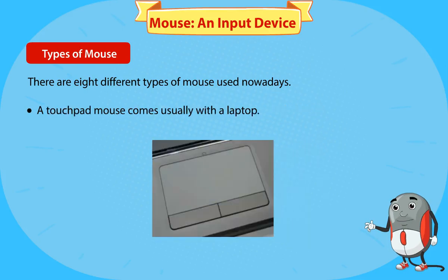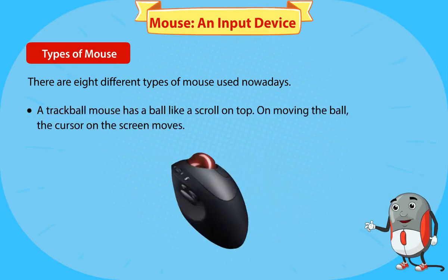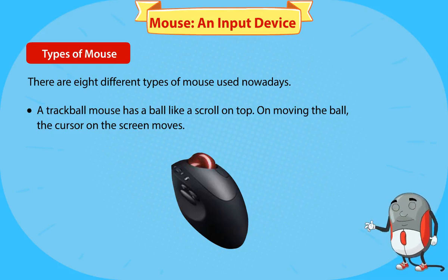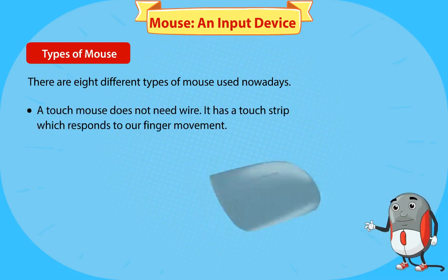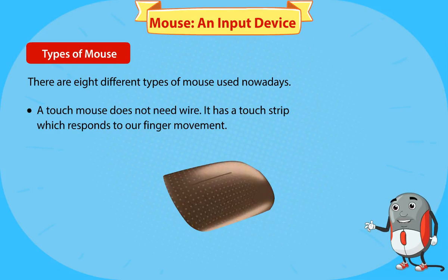A gaming mouse works like a scroll mouse but is much faster. A touchpad mouse comes usually with a laptop. A trackball mouse has a ball on top; moving the ball moves the cursor on the screen. A touch mouse does not need a wire — it has a touch strip which responds to finger movement.